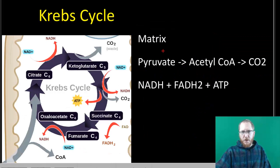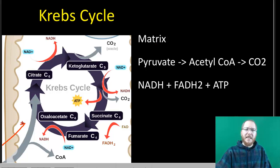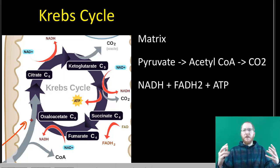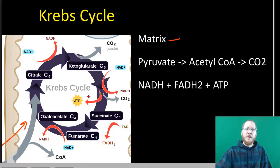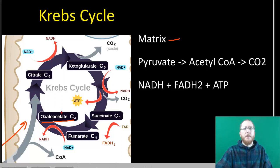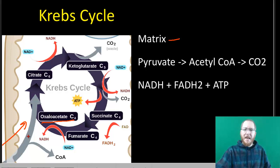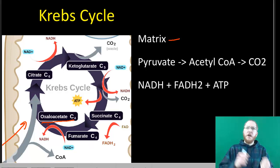The next step is the Krebs cycle, which occurs in the mitochondrial matrix. Pyruvate travels from the cytosol into the innermost cytosol-like substance of the mitochondria, which we call the matrix. This is a cycle because it starts with oxaloacetate, and at the end of the process you end back up with oxaloacetate — it's regenerated. It's like using a bucket: you fill it, dump it, and still have the bucket ready for the next load.